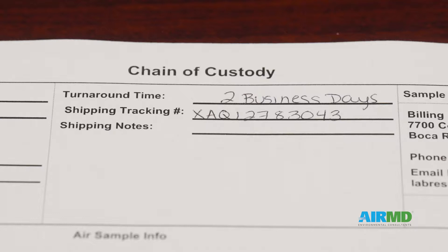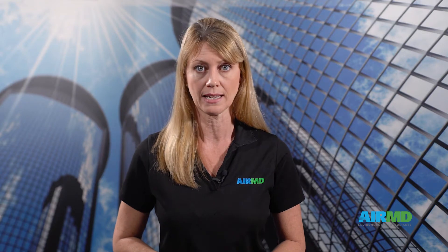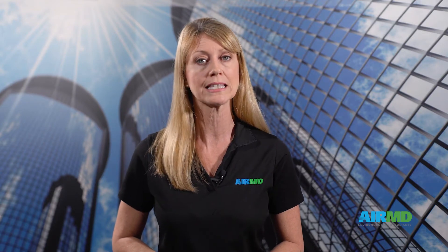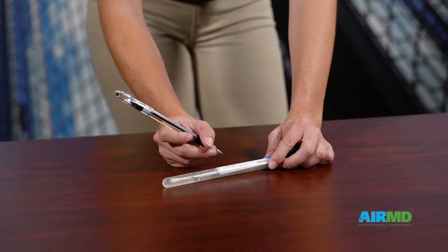The shipping tracking number must be documented along with any specific shipping notes or criteria. The sampling date must also be completed to indicate when the samples were collected.